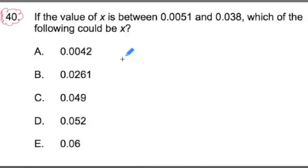Now we're going to solve the problem. It says, if the value of x is between 0.0051 and 0.038, which of the following could be x? I'm not going to get trapped dealing with place value. What I'm going to do is use a strategy to make this problem a lot easier.